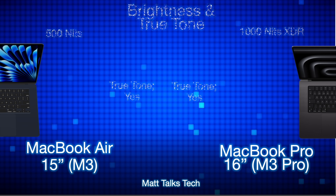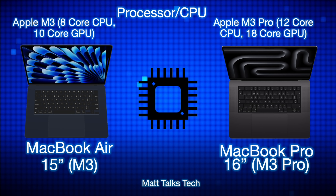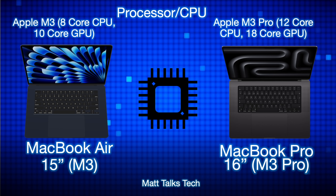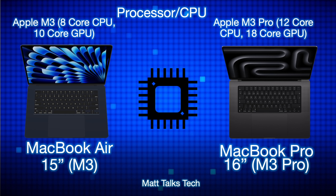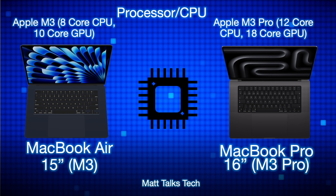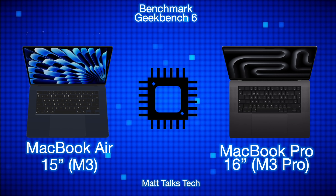The biggest difference is the processor. The MacBook Air 15-inch has the standard M3 chip with an 8-core CPU and 10-core GPU. The MacBook Pro 16-inch starts with the M3 Pro, featuring a 12-core CPU and 18-core GPU — roughly 50 to 70 percent more power. The cores are clocked at the same speed; you just get more of them on the M3 Pro.